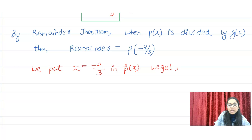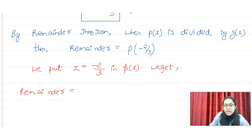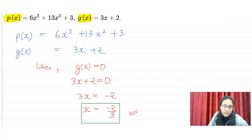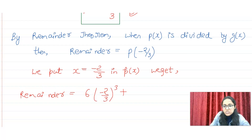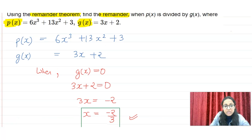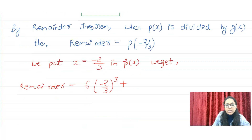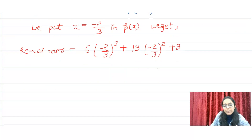Now we will see what we get. We put x = −2/3 into p(x). So we write: p(−2/3) = 6 times (−2/3)³ plus 13 times (−2/3)² plus 3. I have added the values here.